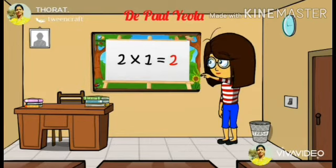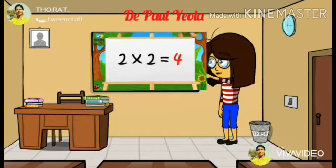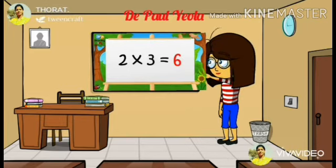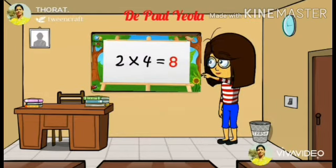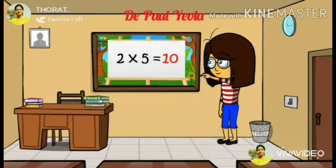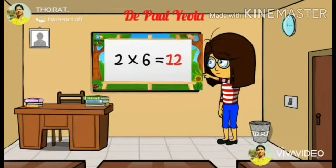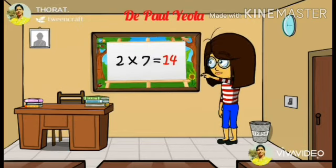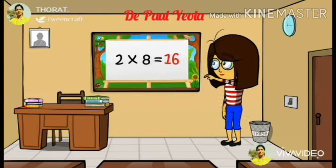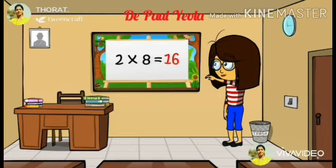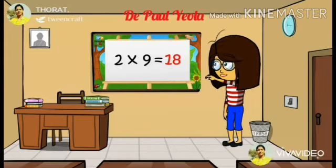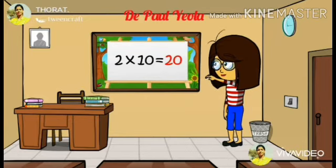2 ones are 2, 2 twos are 4, 2 threes are 6, 2 fours are 8, 2 fives are 10, 2 sixes are 12, 2 sevens are 14, 2 eights are 16, 2 nines are 18, 2 tens are 20.